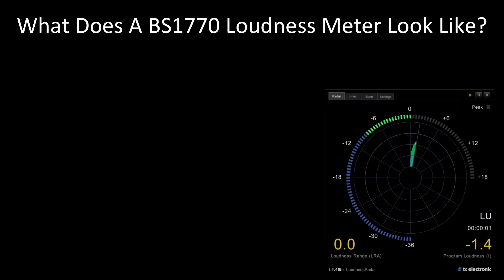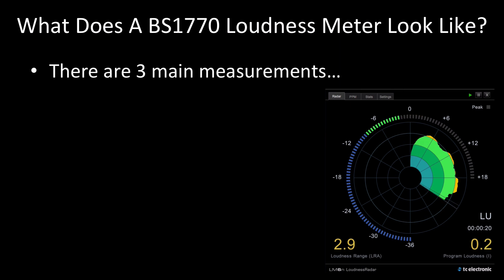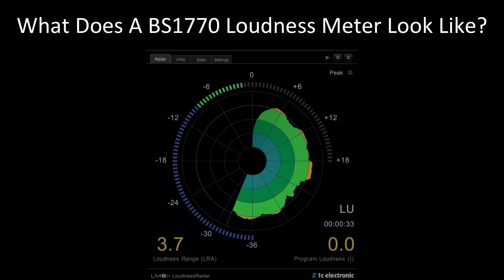When the BS 1770 standard was set, they determined how a compliant meter should measure the various parameters, but they rightly chose not to specify how a compliant meter should look. As a result, there are a range of loudness meters to choose from. All BS 1770 meters will have a minimum of three loudness measurements, all of which are averages. The first two — momentary and short-term — are tools to help us mix content that will be loudness compliant, but they don't normally form part of the delivery specs.